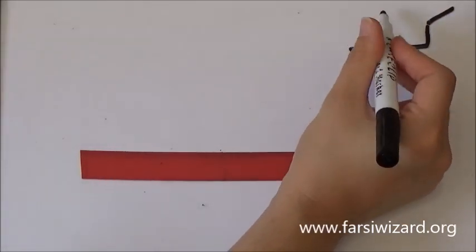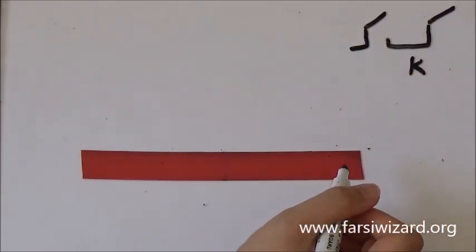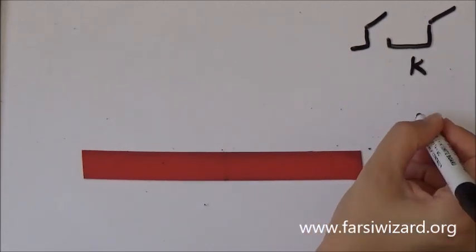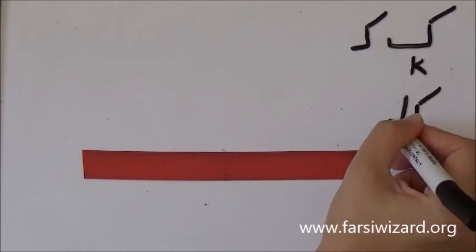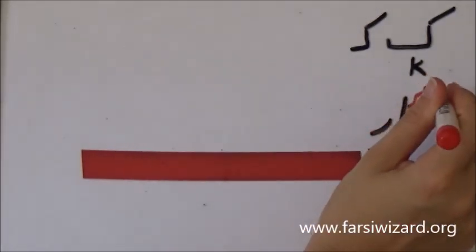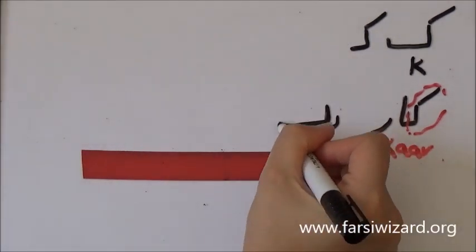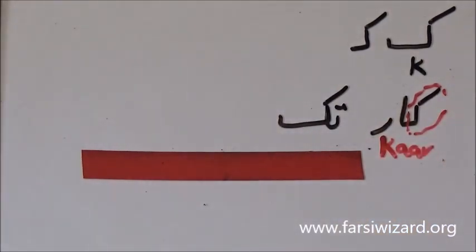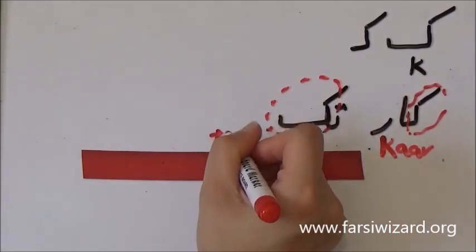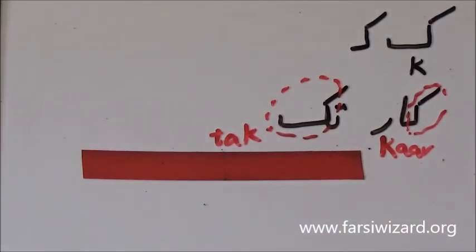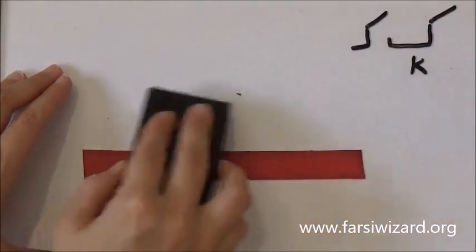Now we're going to focus on the next one, which is KOF. The letter KOF has a sound kind of like K in English. This one is much easier because there are only two forms. The first example is the word KAR, which basically means work, job, or action. It's interesting that KAR is connected to the word karma in English — originally the word comes from Sanskrit, related to acting and doing something. The next example is TAK, which in Farsi means unique — something that is one and only. If you refer to something or someone as TAK, it means you're showing admiration.